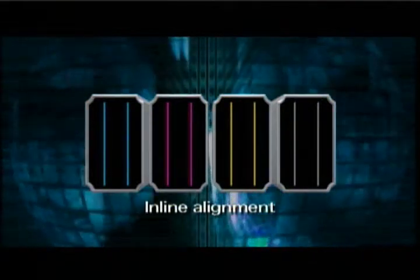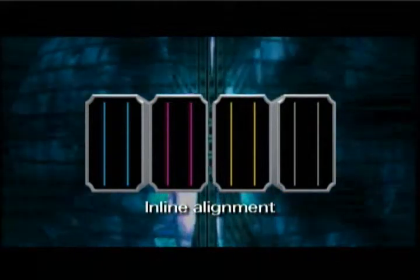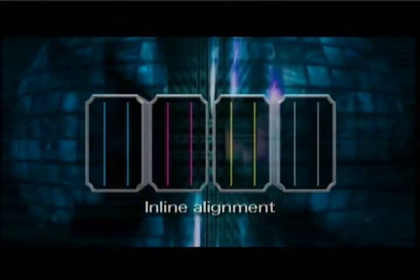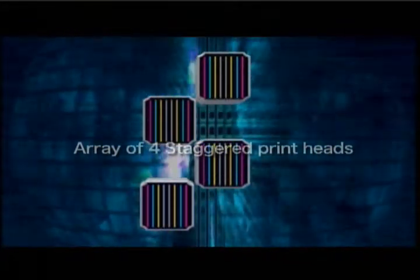The usual head configuration in solvent inkjet printing is an inline alignment. In the JV-5 series, we've adopted a four head staggered configuration with the newly developed high speed heads.